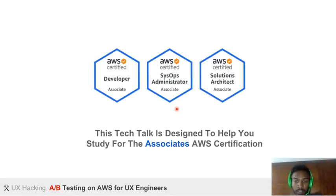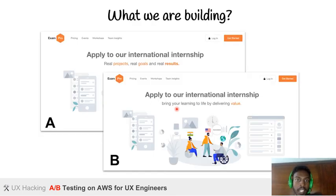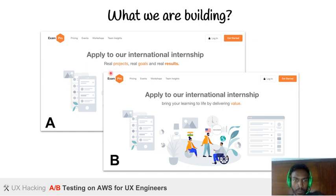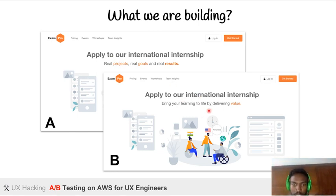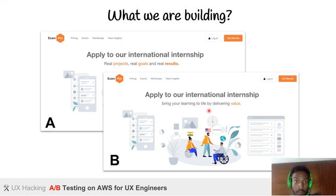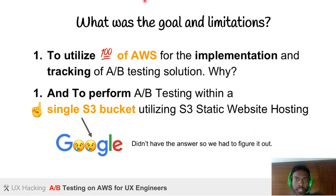What are we building here? We are making two prototypes — prototype A and prototype B — with two different taglines, and we want to see what works best for the user. That's what AB testing is all about.